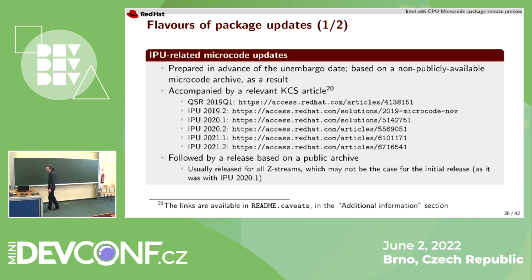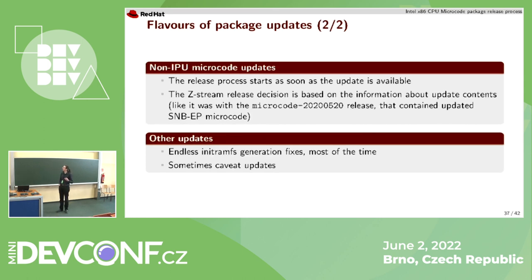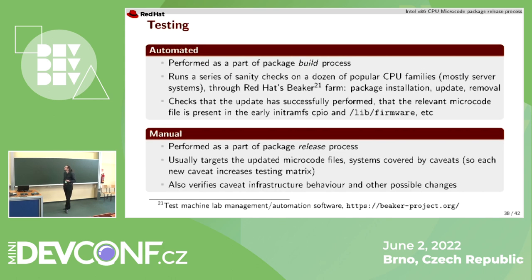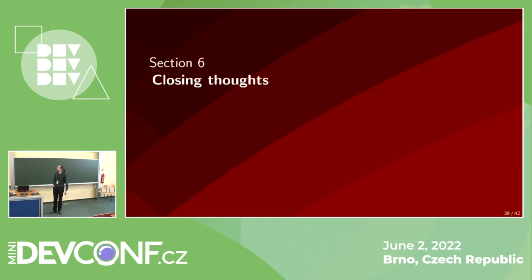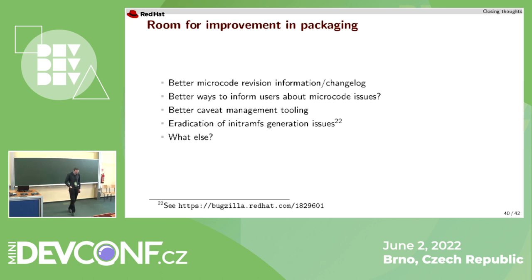The release process is more or less straightforward. The only difference is that when we have embargoed content, we package a non-public tarball and then update it after the embargo is lifted. Testing is performed both automatically during the build and manually during the release, to try to catch any possible issues as early as possible. There is a lot to improve in the packaging — specifically it would be nice to not mess with dracut, make everything more transparent, and get rid of all the weird accumulated complexity over the years.